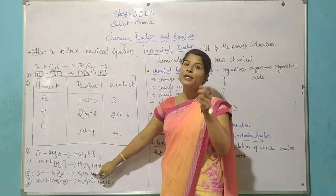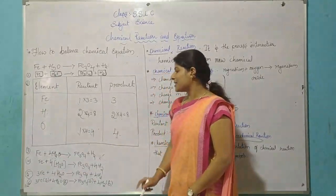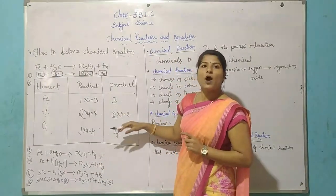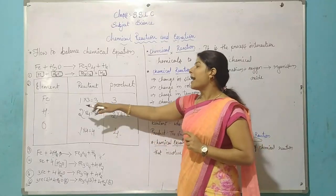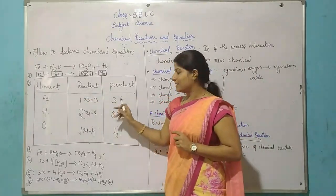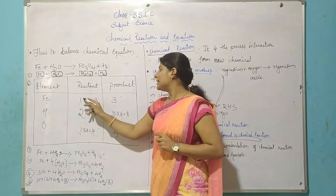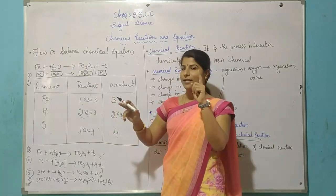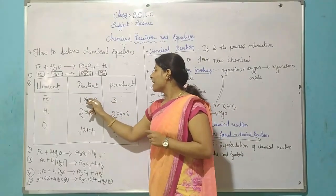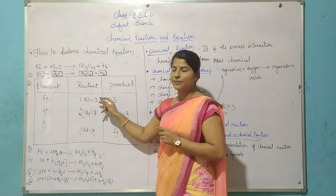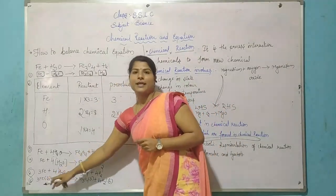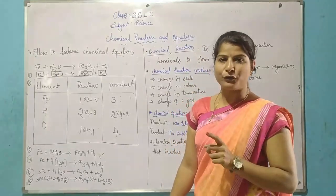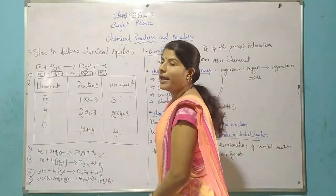Now we write the next equation: Fe + 4H2O → Fe3O4 + 4H2. Hydrogen and oxygen are now balanced. Now we check if iron is balanced. Iron is not yet balanced — in the product side there are 3 Fe, but on the reactant side only 1. So we multiply by 3: 1 × 3 = 3. We write 3 in front: 3Fe + 4H2O → Fe3O4 + 4H2.